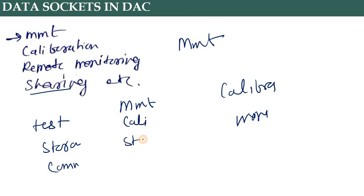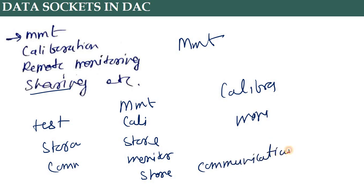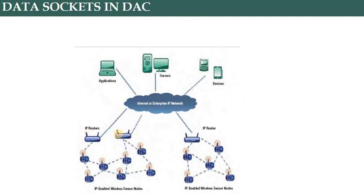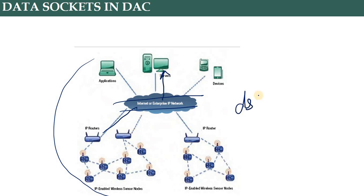We have the same types of operations here: validate, store, monitor, and share. There are a lot of things which we cannot do without data sockets. Through the wire you can connect with your servers, and that server is connected to the internet and the cloud. We can see the general architecture of how a database is connected to the servers, and the protocol is DSTP — the Data Socket Transfer Protocol.